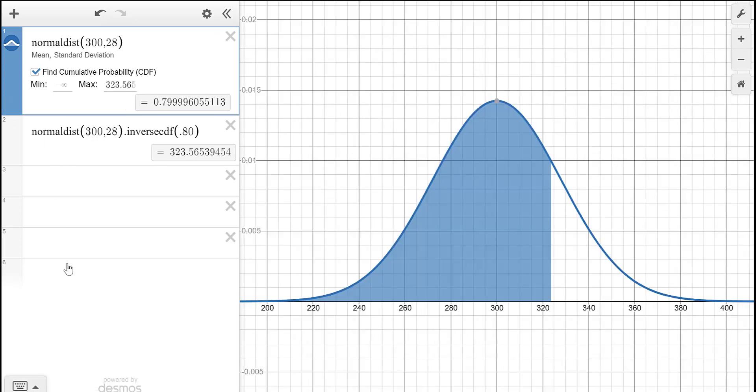So what does this say? Say we had something, maybe it was an animal that weighed 300 pounds on average and the standard deviation was 28, then that says we would expect 80% of that animal to weigh less than 323.565 pounds. That's what we can look at here. It's a really quick way to do this. It's very helpful.